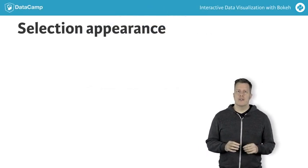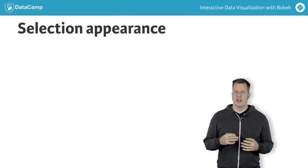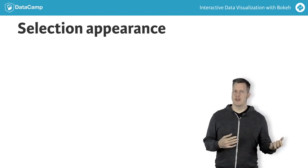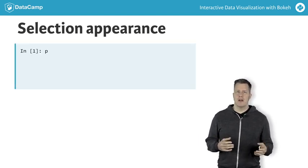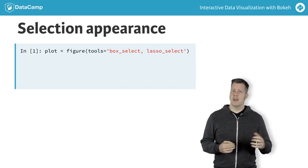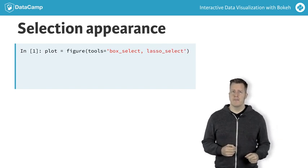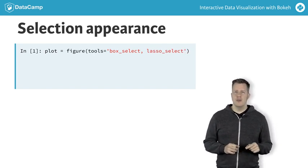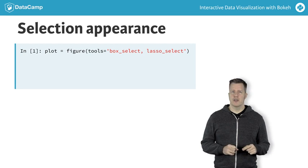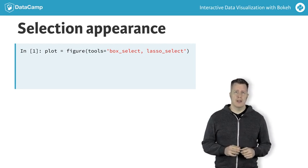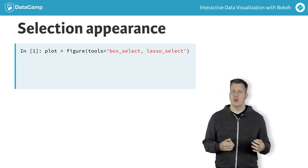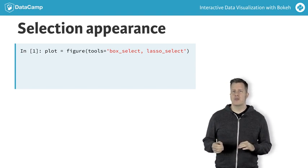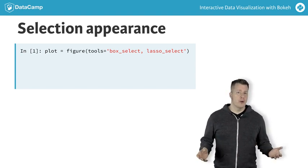Bokeh has several different tools to enable users to select points on a plot using mouse or touch interactions. In this example, we create a figure that specifies tools equals box select, lasso select. This configures our plot to have two different kinds of selection tools: a box select tool that allows users to select points by dragging a rectangular region, and a lasso tool that allows points to be selected by drawing a freeform curve.